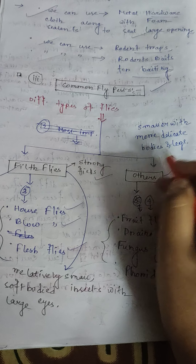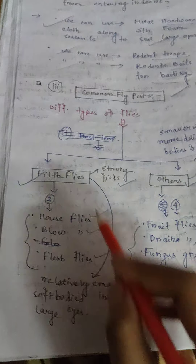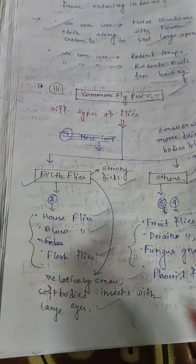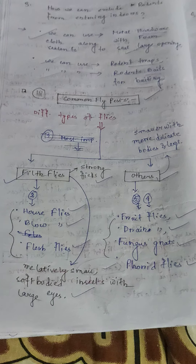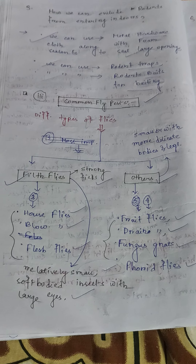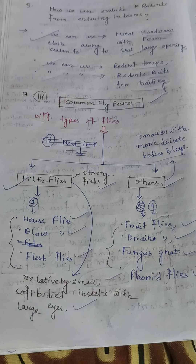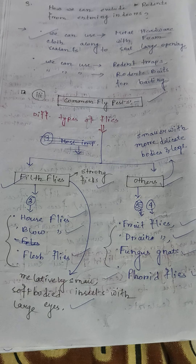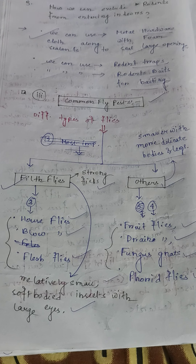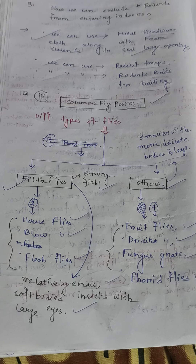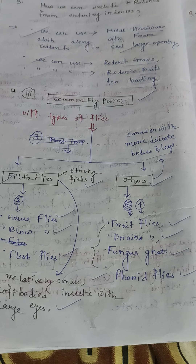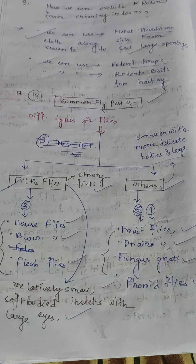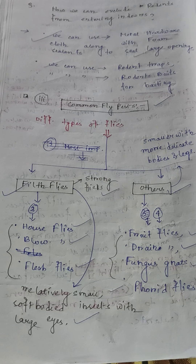Rodent problems: rats and mice spread diseases through their feces and droppings, through their urine, by contact with surfaces, and through contaminated foods. Rodents — rats and mice — contaminate foods and spread diseases.